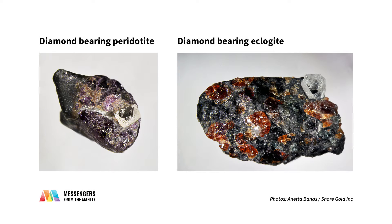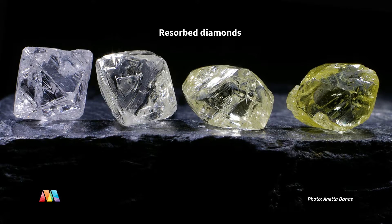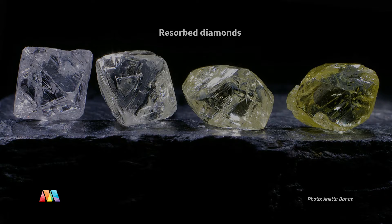Firstly, diamonds form by metasomatic reactions, either in peridotite or eclogite in the main. In addition to that, there are metasomatic events which resorb the diamond while it's being stored in the mantle. There are also a number of metasomatic reactions which have no effect on the diamond.